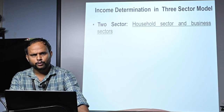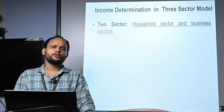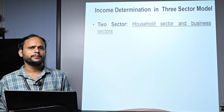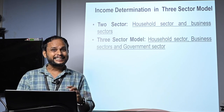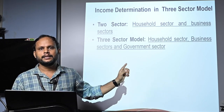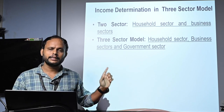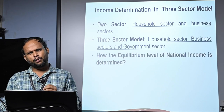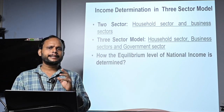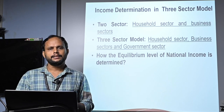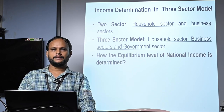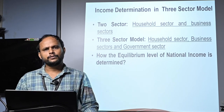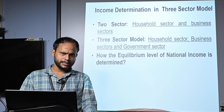If we are adding one more sector to the Keynesian two-sector model — that is the government sector — then that two-sector model will become a three-sector model. So in a three-sector model there will be a household sector, a business or investment sector, as well as a government sector. Our basic concern is how the equilibrium level of national income is determined in a three-sector model. There are two conditions required for the attainment of equilibrium level of national income in a three-sector model.